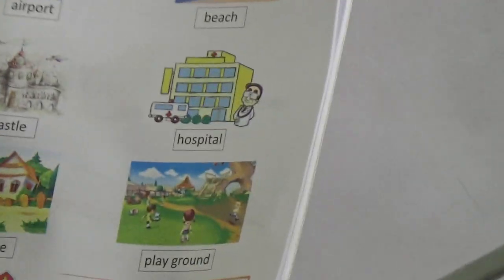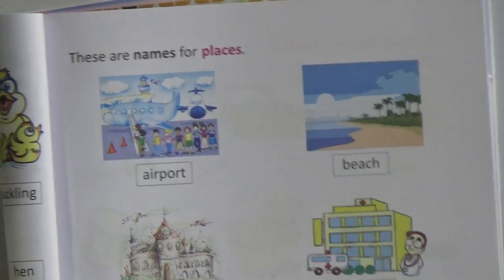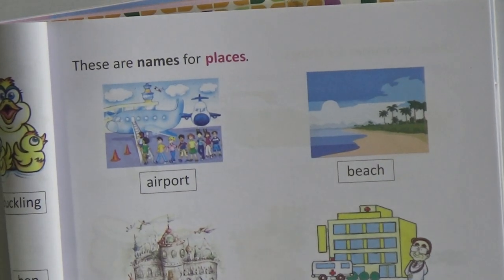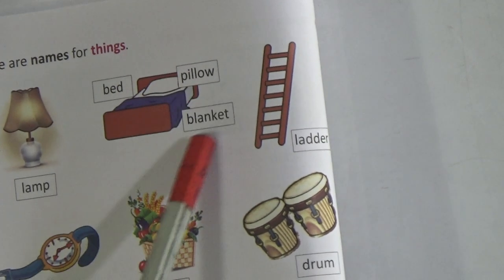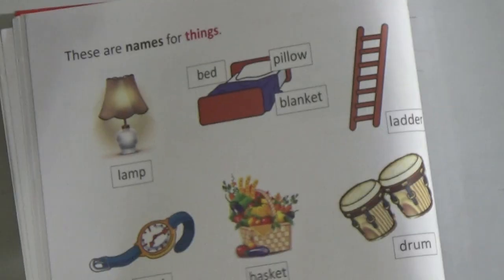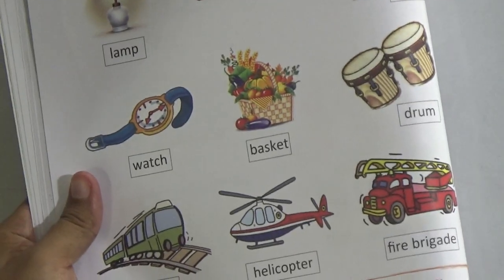Now go to page number 33. These are names for places: airport, beach, castle, hospital, house, playground, school. These are the names for places. Now go to the next page — page number 34. These are names for things: lamp, bed, pillow, blanket, ladder, watch, basket, drum, train, helicopter, fire brigade truck.